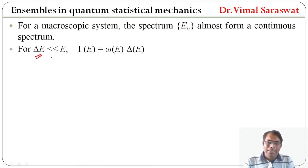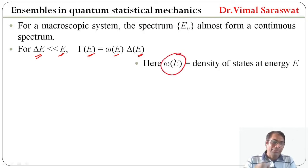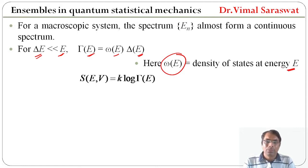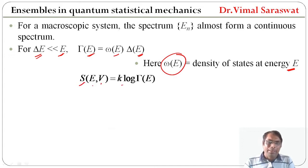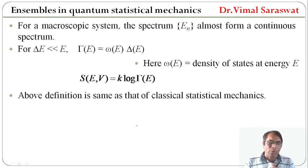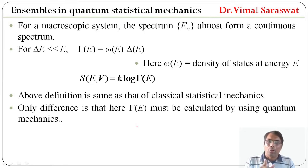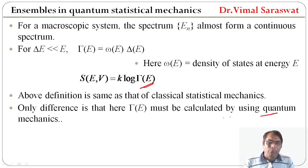For delta E very much less than E, gamma(E) equals omega(E) times delta E, where omega(E) is the density of states at energy E. Entropy S is a function of E and V, and is equal to K log gamma(E). This definition is the same as that of classical statistical mechanics. The same definition is also found in classical statistical mechanics; the only difference is that here gamma(E) must be calculated by using quantum mechanics.